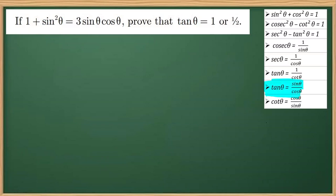We know that tanθ is actually sinθ divided by cosθ. So what we are going to do is divide each term by cos²θ. Dividing both LHS and RHS by cos²θ, we get 1 over cos²θ plus sin²θ over cos²θ.